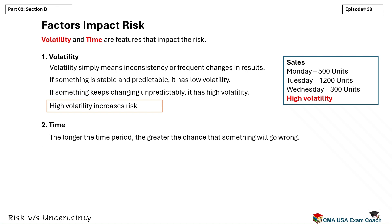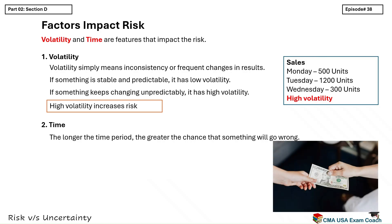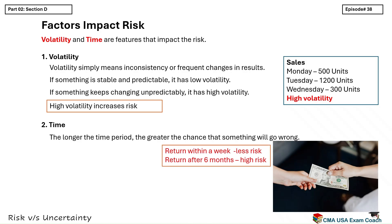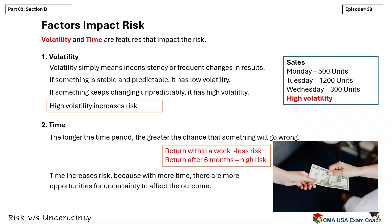Now let's talk about time — a very important factor in risk. The longer the time period, the greater the chance that something will go wrong. For example, imagine you lend some cash to a friend. If they promise to return it next week, the risk is relatively low. But if they say they'll return it after six months, the risk is much higher, because in six months many things could happen that might affect their ability to repay you. A project or decision that spans a longer period of time is usually riskier than one completed in a shorter period. So we say time increases risk, because with more time, there are more opportunities for uncertainty to affect the outcome.